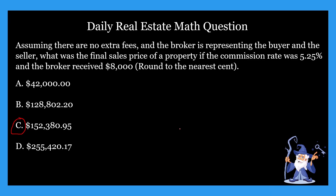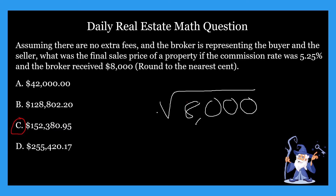Like yesterday, this is a pretty similar problem. The formula for finding commission, as you guys know, is you just multiply whatever percentage you have by the total price of the house. In this case, they gave us the rate and what the broker received, so we have to adjust the steps slightly. In order to find this, you take your $8,000 and divide it by the percentage, which is 5.25 — obviously you need to put that in decimal form, which is 0.0525. You plug this into the calculator — you're going to be able to use a calculator on the exam, so no need to worry about long division. That gives you the answer: $152,380 and 95 cents.